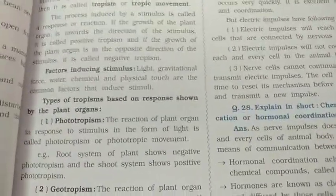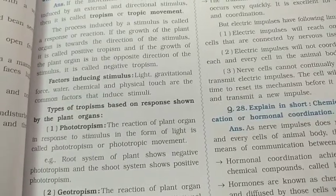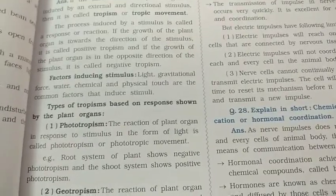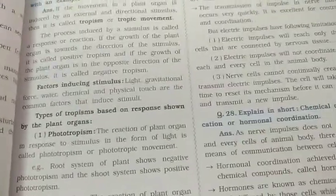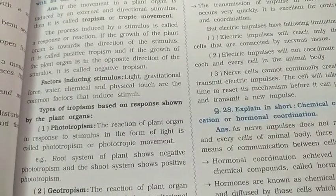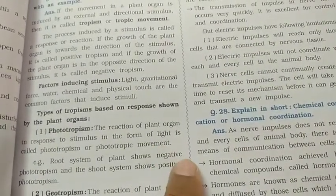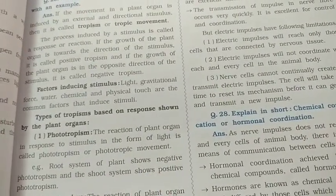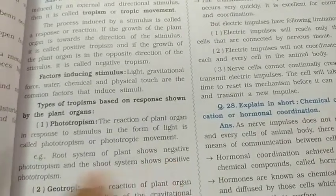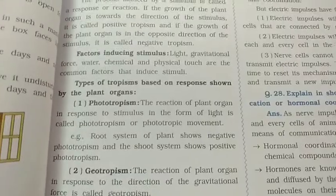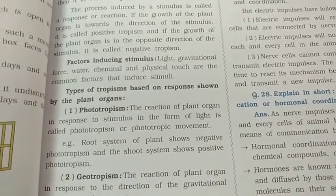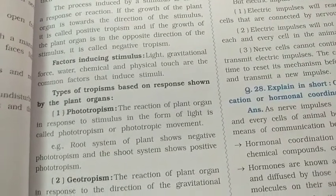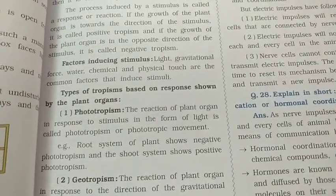Light comes from above. The root system of plants shows negative phototropism because roots grow downward, in the opposite direction of light. The shoot system shows positive phototropism because the stem grows upward, towards the direction of light. So root is negative and stem or shoot is positive.